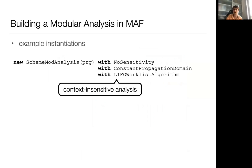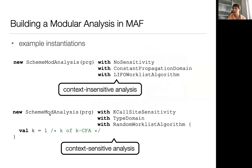For instance, this code here creates a function modular analysis for Scheme that is context insensitive, uses a constant propagation domain, and a last-in-first-out worklist algorithm. Alternatively, this code shows how one can create a 1-CFA context-sensitive analysis in Scheme, also using a different abstract domain and a different worklist algorithm. So, as you can see, many combinations are possible.